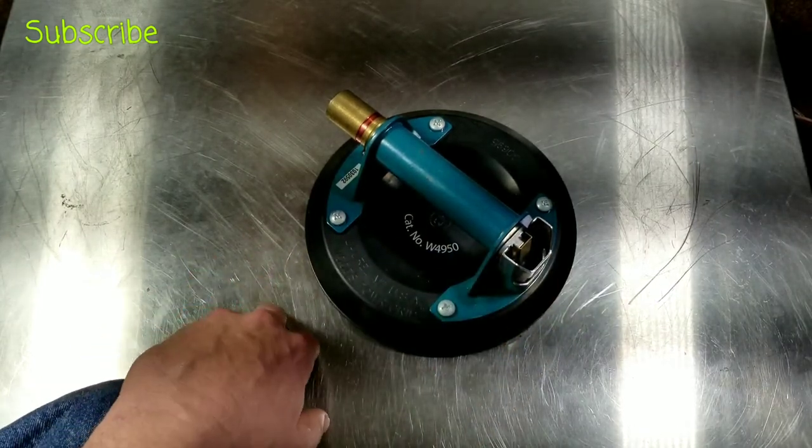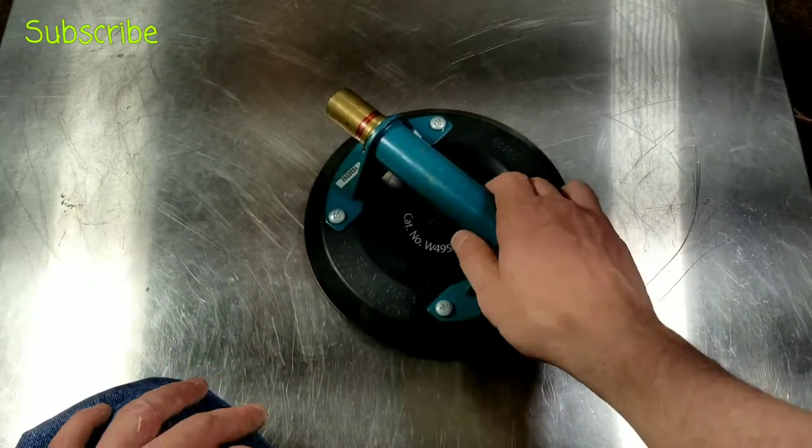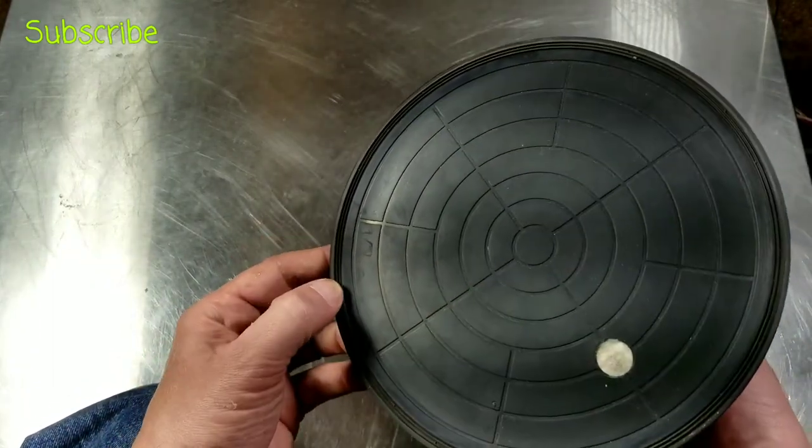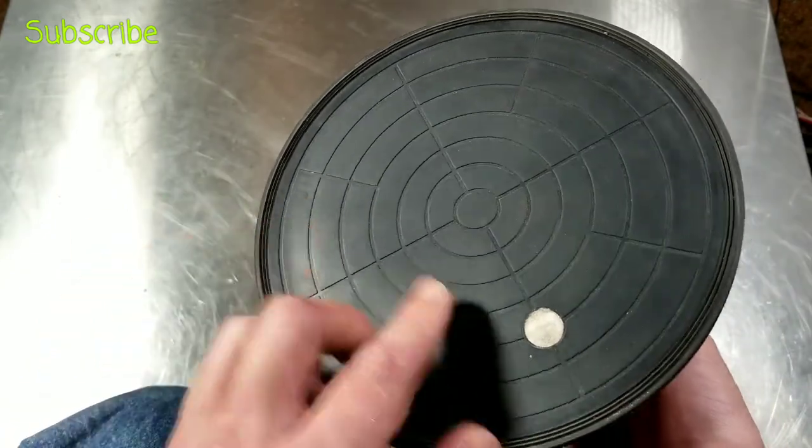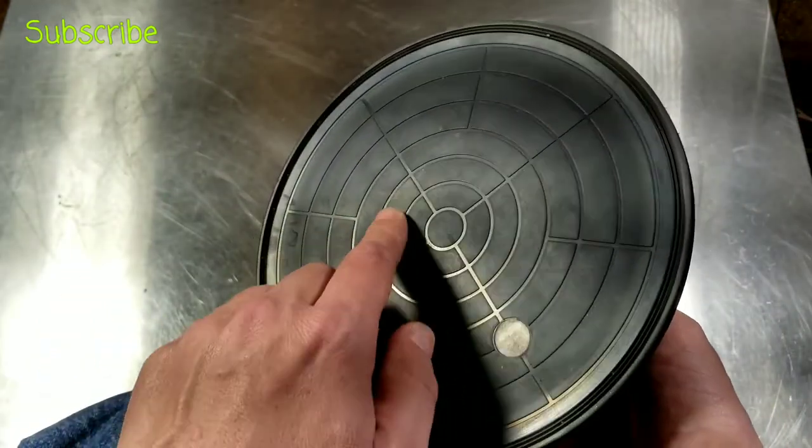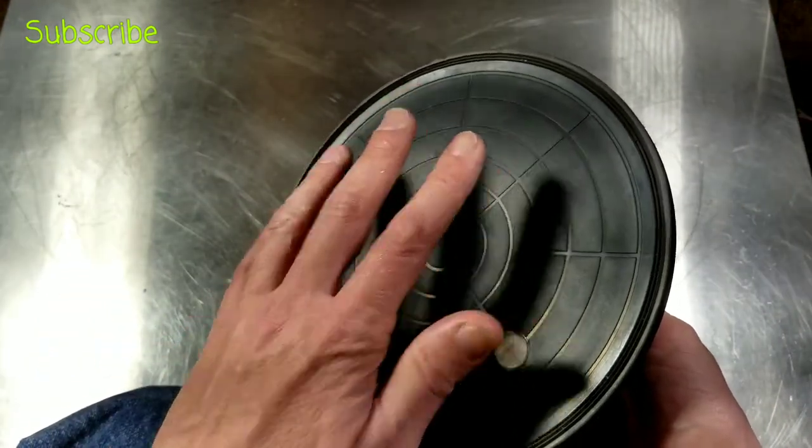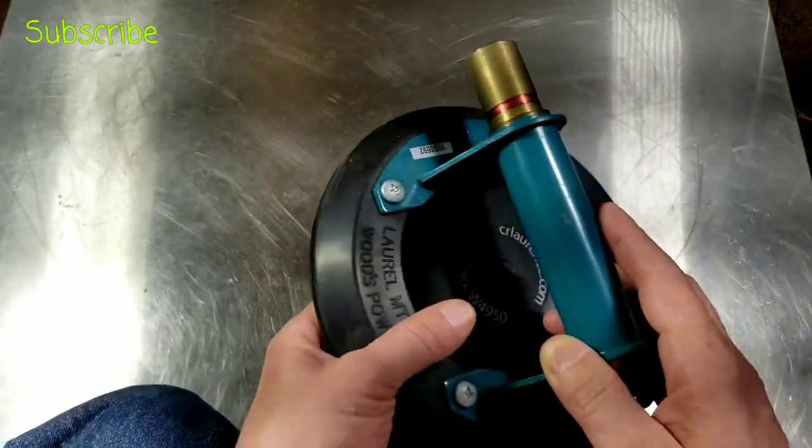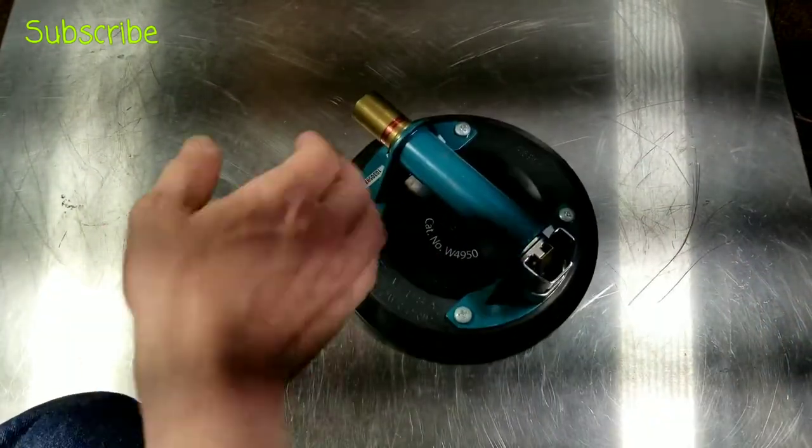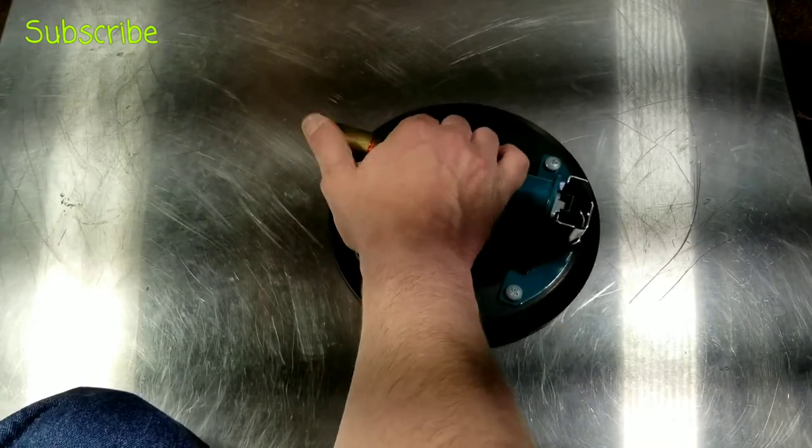They have a nice multi-layer seal around the edge, a little filter where it sucks in, and then this pad which has convolutions to allow the air to escape. Even on something normal like this stainless steel, you just place it and pump it up.